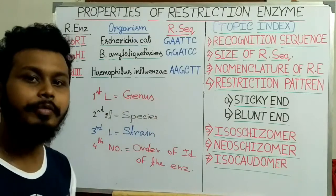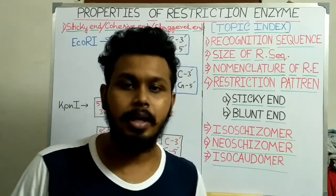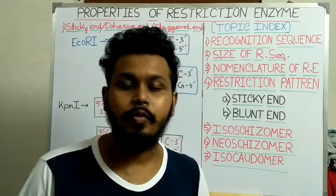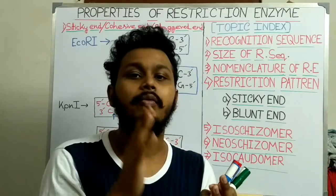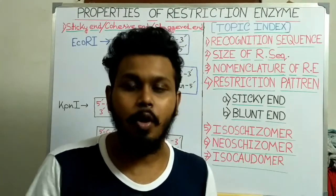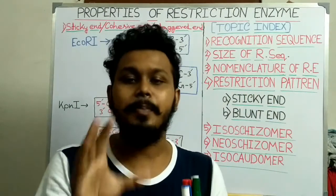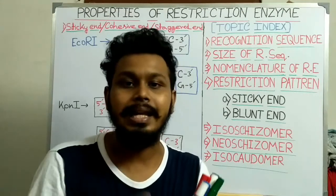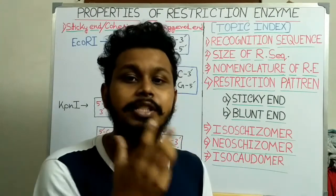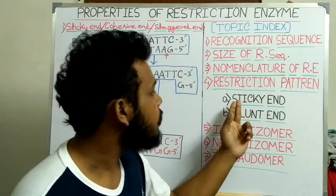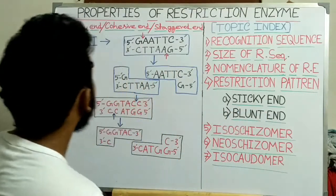Now I will discuss about the restriction pattern. After cutting or cleaving the DNA with a particular restriction enzyme at a particular sequence, the DNA will present in two forms or two patterns, and those patterns are called the restriction pattern. The restriction enzyme can cut the DNA in two ways and produce DNA which is present in two forms: the sticky end or the blunt end.